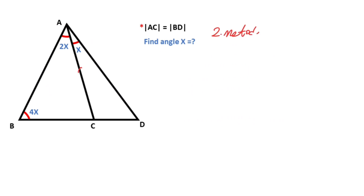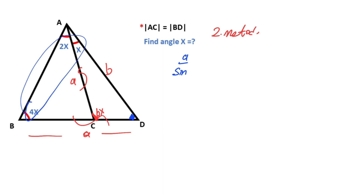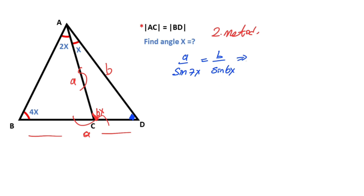Now we will calculate the value of x using the second method. These sides were given equal, and angle A, C, D equals 6x. Let's call these equal sides 'a' unit, and here I'll represent with b. If you focus on this triangle and apply the sine rule, A over sine of angle A, D, B — we know that sines of supplementary angles are equal, so we can calculate sine 7x instead of sine of angle B, D, A — equals b over sine 6x. That means a over b equals sine 7x over sine 6x. This is the first equation.